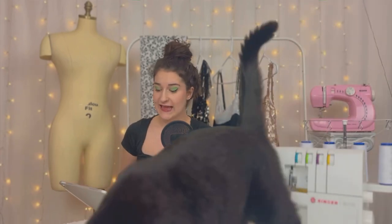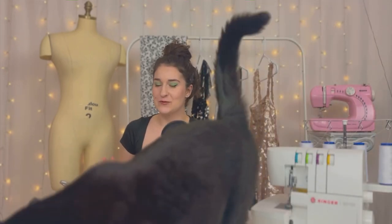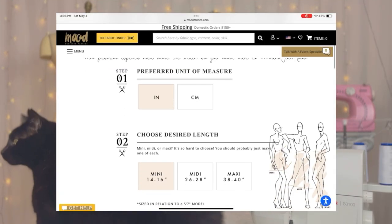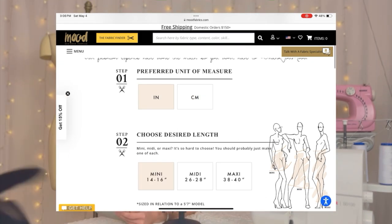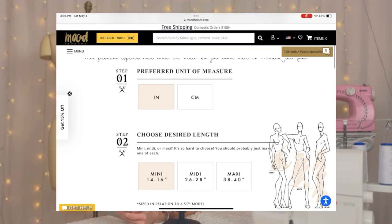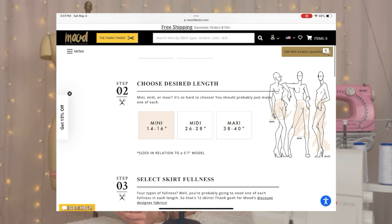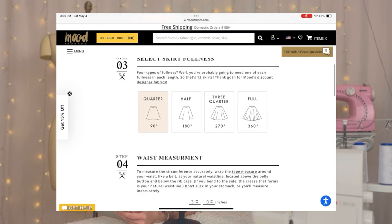All you have to do is input your measurements and it's going to give you exactly what you need. It says preferred unit of measure, inches or centimeters. I'm going to use inches even though I'm Canadian, just because I'm used to it in sewing. Choose desired length - mini, just because it's a tutorial and I don't want to waste fabric.